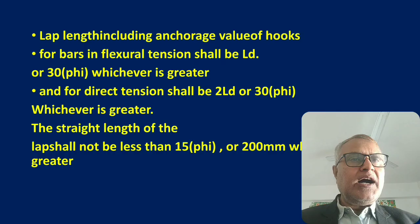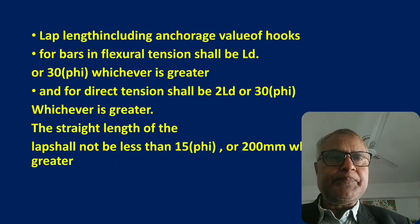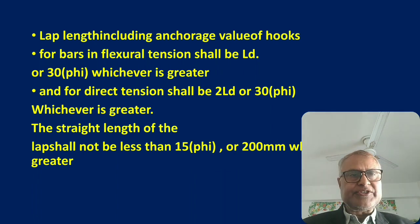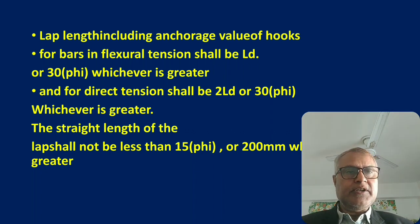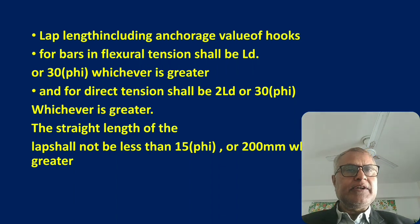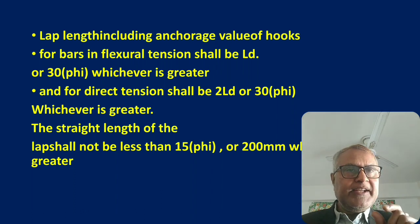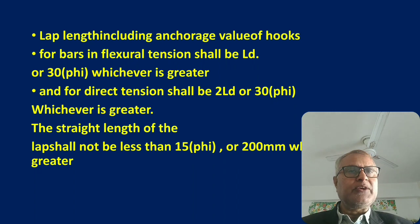Next, lap length including anchorage value of hooks — in flexural tension it shall be LD. The minimum lap length should be LD (development length, calculated by a certain formula from IS code) or 35φ (where φ is the diameter of the bar), whichever is greater. The lap length must not be less than the greater of these two values: 35φ and LD.